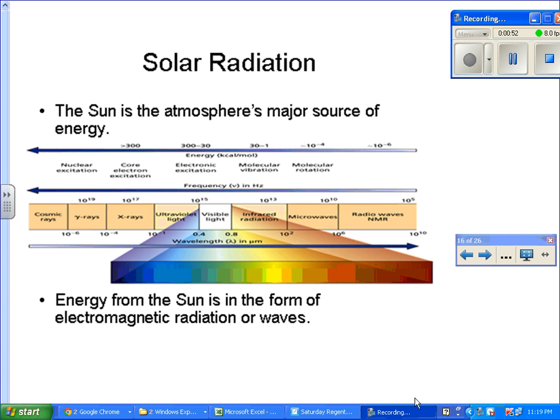Then you have visible light - ROYGBIV - your violets, blues, greens, yellows, oranges, all the way to red. As you're going from left to right in this example, the wavelengths are increasing. Then you get into infrared radiation, which is radiation that you can feel - heat energy. Notice the wavelengths are longer.